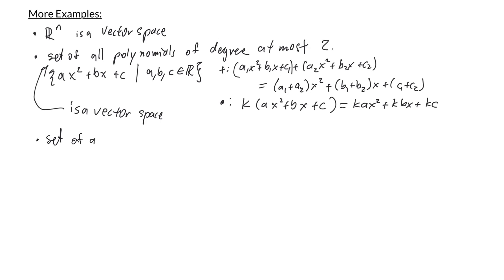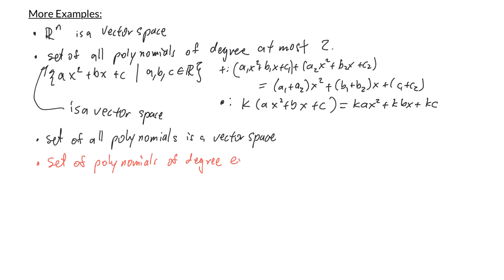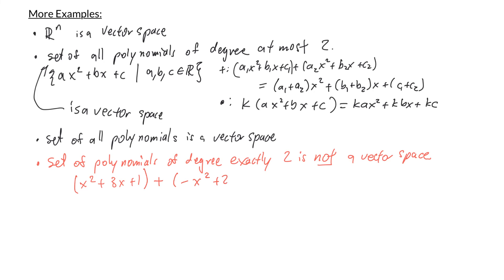In fact, the set of all polynomials is also a vector space, where addition is the sum of polynomials and scalar multiplication is multiplying the whole polynomial by a scalar. On the other hand, the set of polynomials of degree exactly 2 is not a vector space because it's not closed under addition. For example, (x²+3x+1) + (−x²+2x−3) = 5x−2, which is not a degree-2 polynomial. So the set of degree-exactly-2 polynomials is not closed under addition and hence not a vector space.